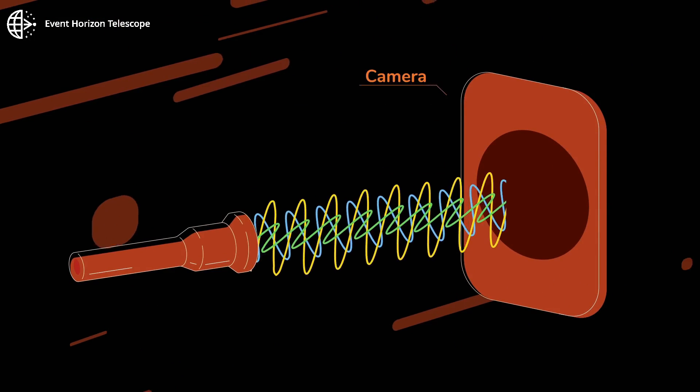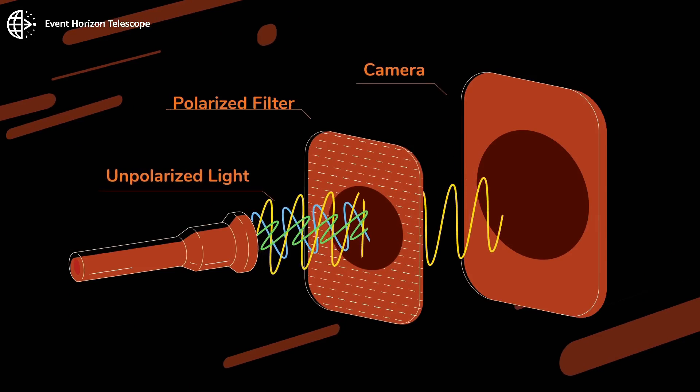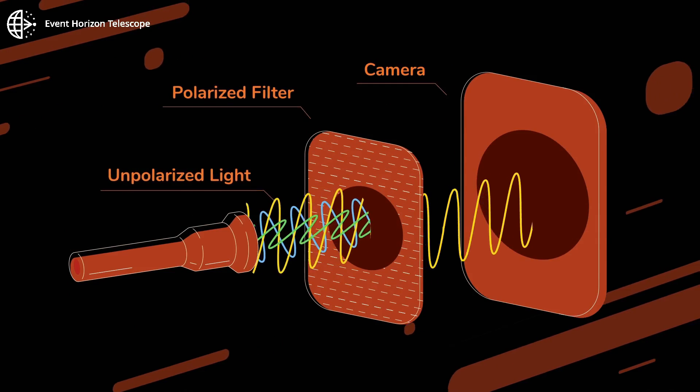Light produced by a torch is unpolarized. When we place a polarized filter in between, the light becomes polarized.